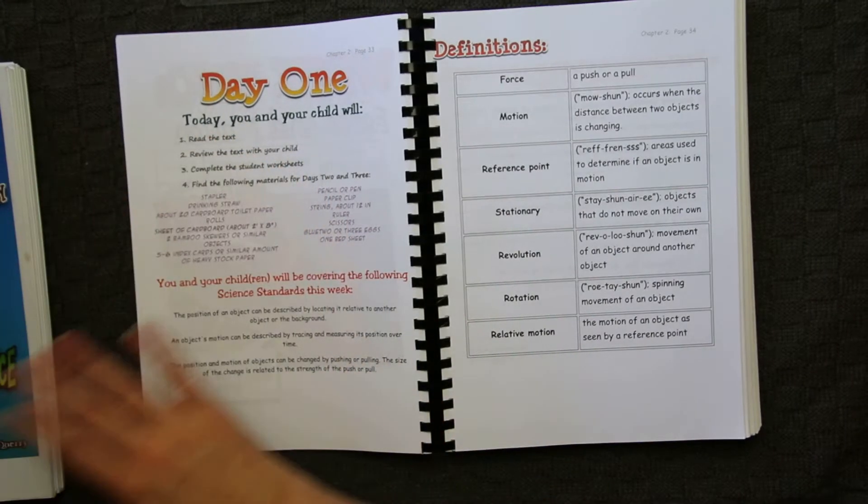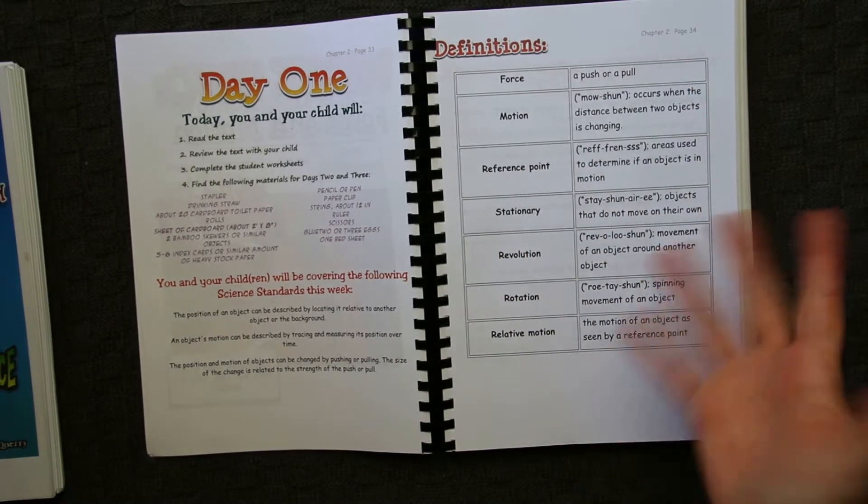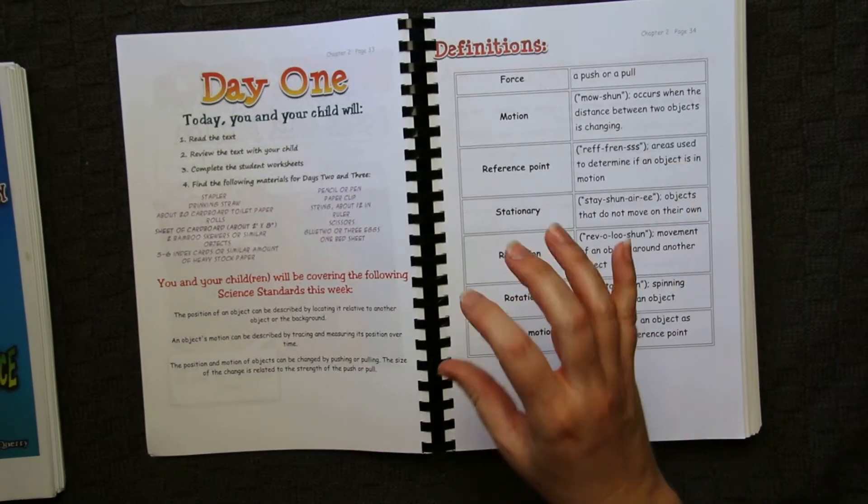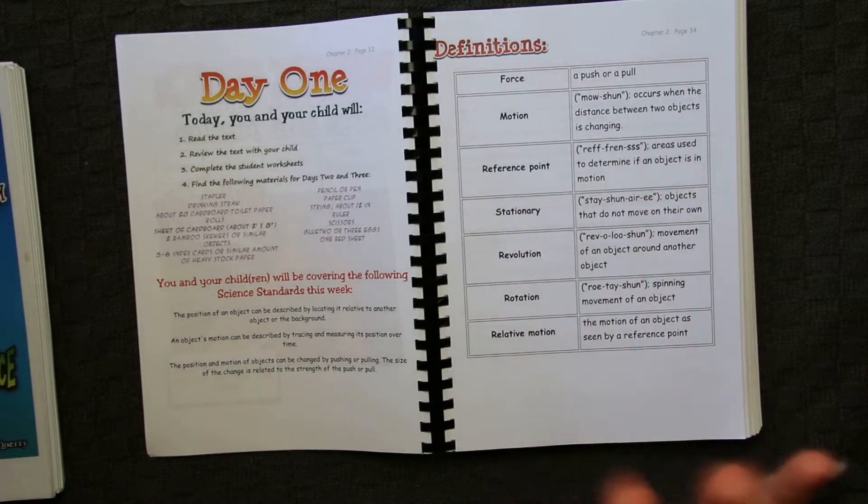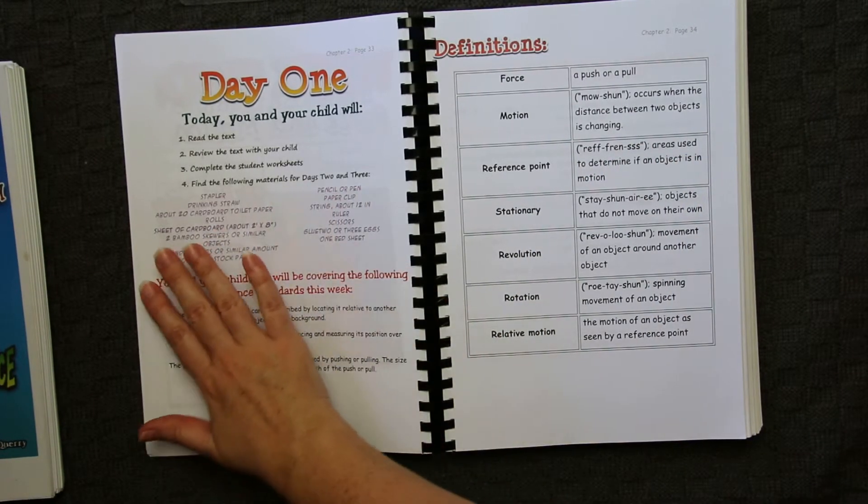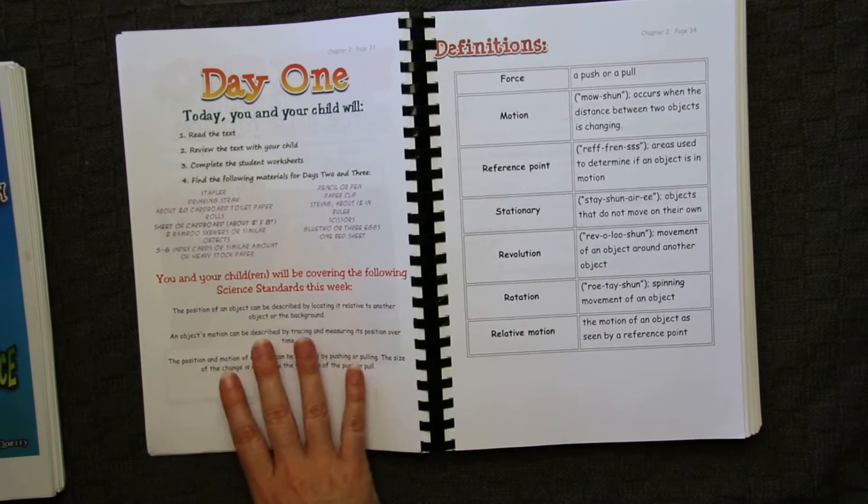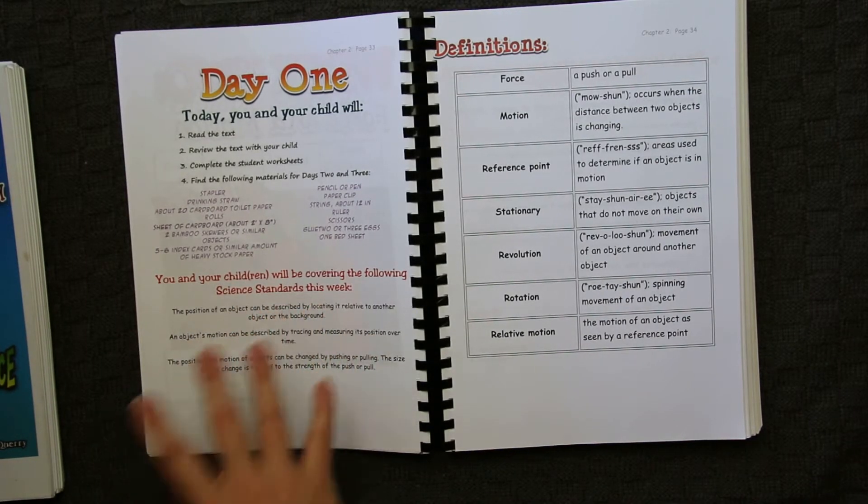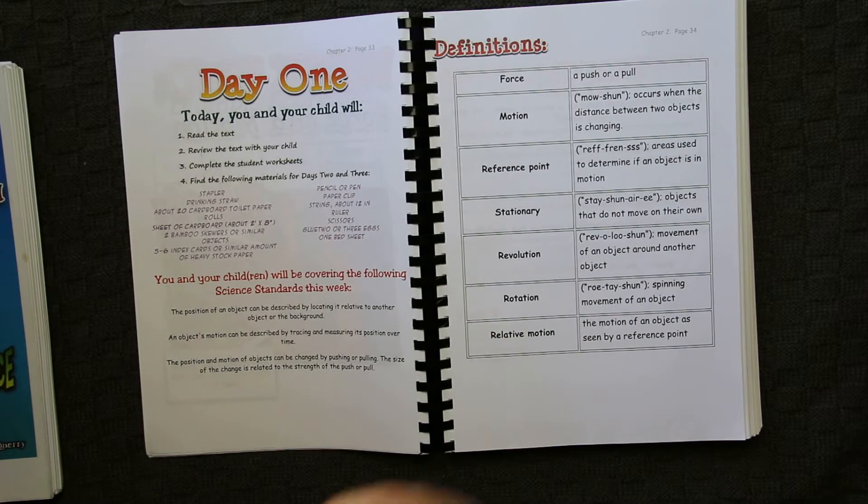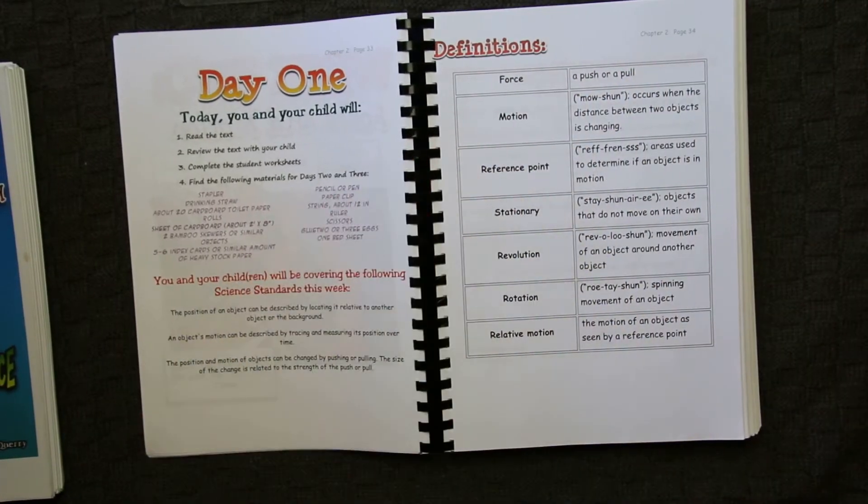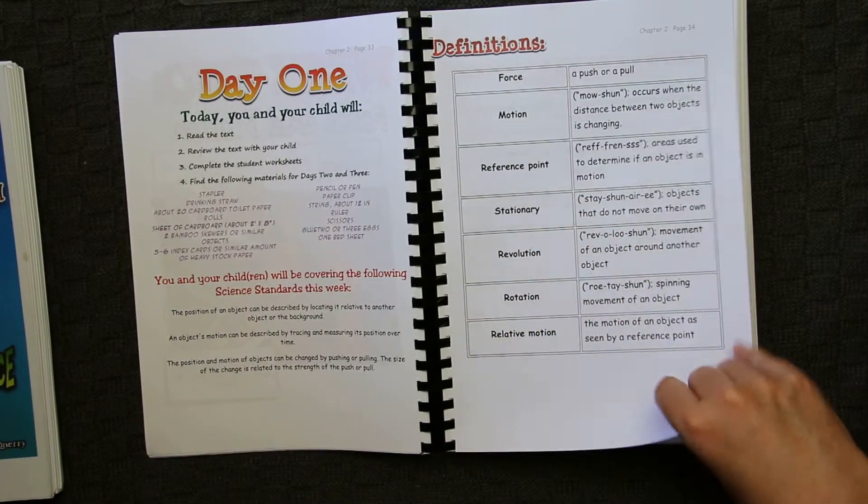Basically it lets you know you need to read the text from the student guide, review the text with your child, complete the student worksheets. Again, I think these are optional. Some of you will like the worksheets and what they give for your child and others of you will think that they are complete and utter busy work. So that's going to be personal preference. Then it lists the materials that you need for the two demonstrations that are going to follow. It covers the science standards. Remember, these are US based science standards, but let's face it, there's very minimal difference between what American kids are doing and what Australian kids are doing in science.